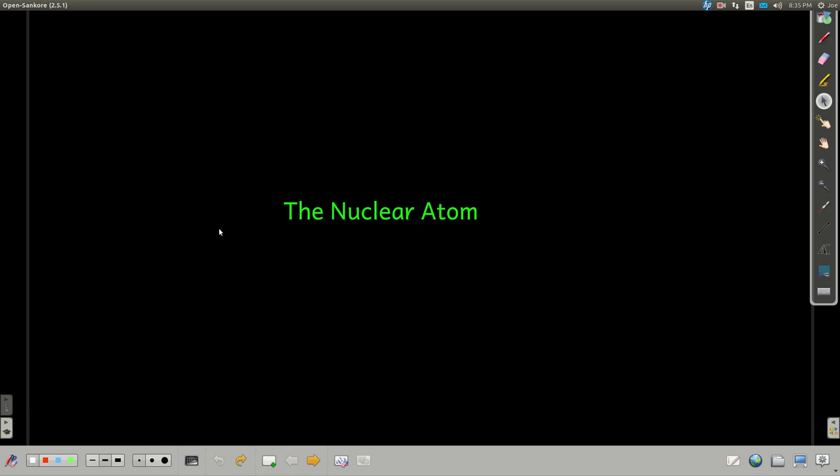In this module, we're talking about the nuclear model of the atom, and we're going to look at J.J. Thompson, who discovered the electron, who came up with the theory,